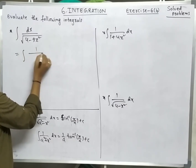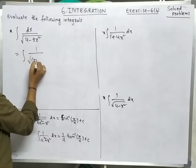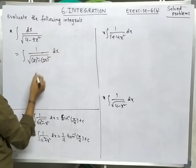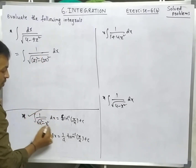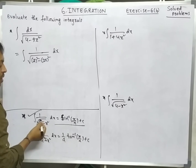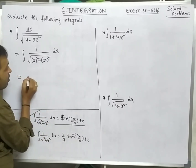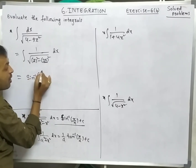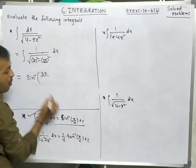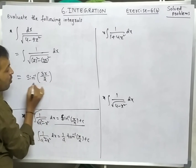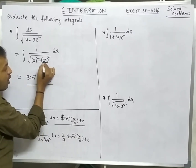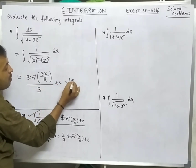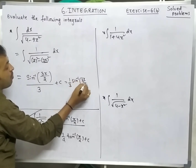First: write the problem as 1/√(4-9x²) = 1/√(2²-(3x)²). This is of the form 1/√(a²-x²) dx = sin⁻¹(x/a) + c. Here x is replaced by 3x and a=2. So sin⁻¹(3x/2), and since the coefficient of x is 3, write 3 in denominator. Answer: (1/3)sin⁻¹(3x/2) + c.